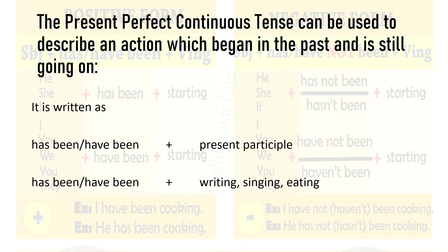When do we use the present perfect continuous tense? It is used when we have to describe an action which has started earlier in the past and is still going on.